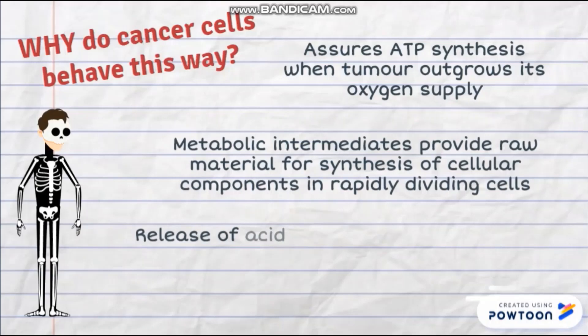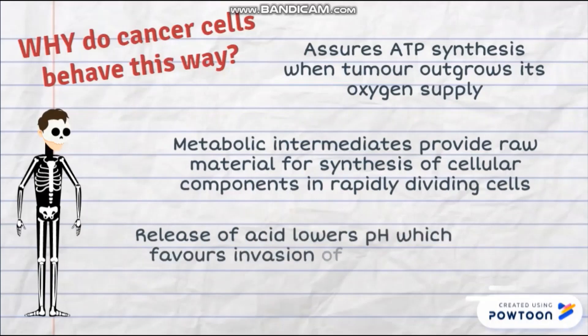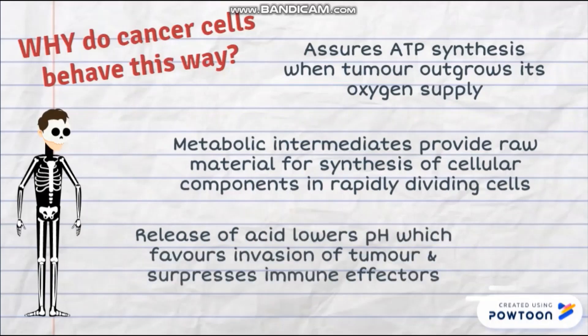In aerobic glycolysis, there is an increased conversion of pyruvate to lactate, leading to accumulation of lactic acid. This decreases extracellular pH, which favors tumor invasion and also suppresses immune effectors.